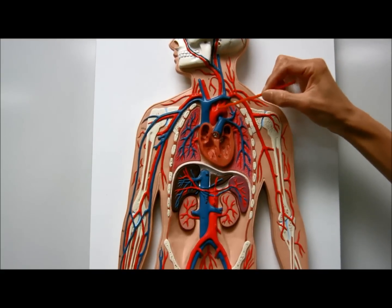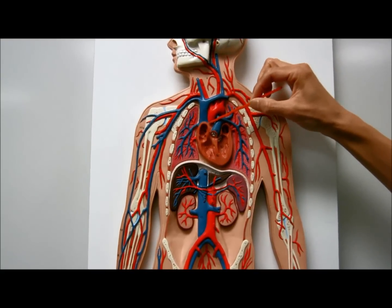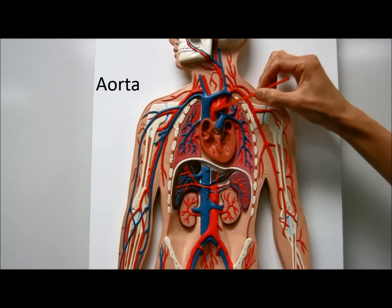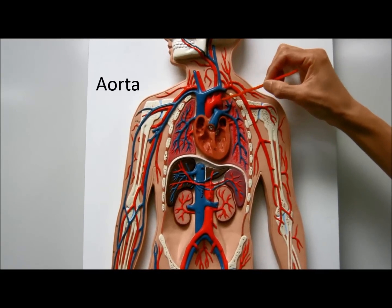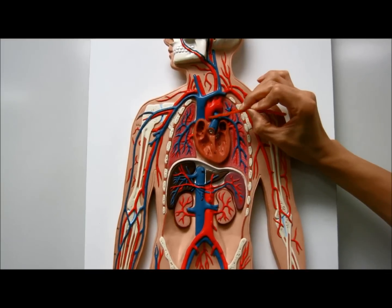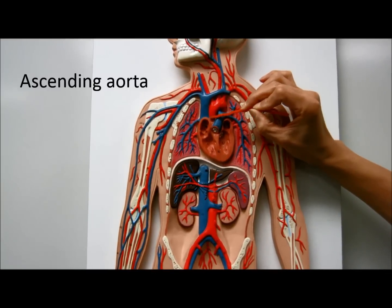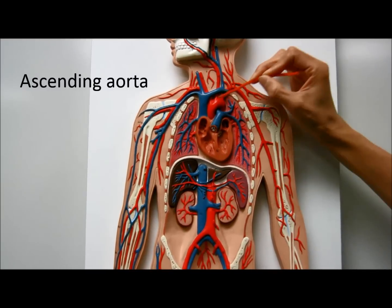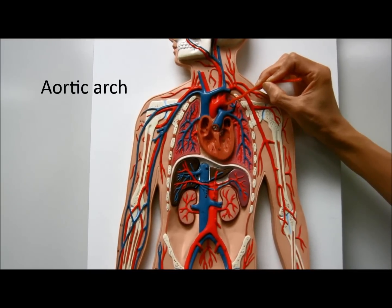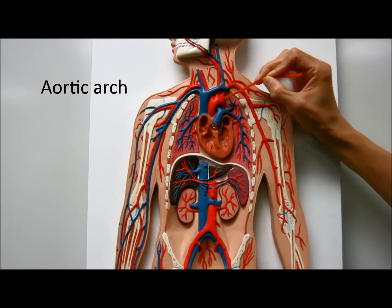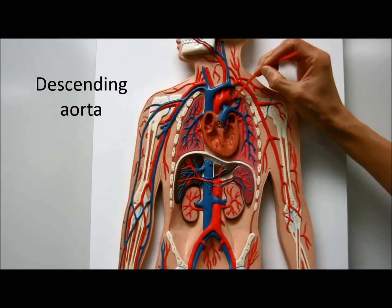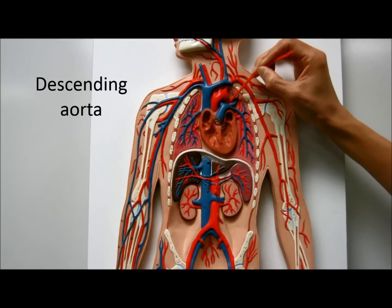Arteries. This is the aorta. This part of the aorta is the ascending aorta. This part of the aorta is the aortic arch. And this going down is the descending aorta.